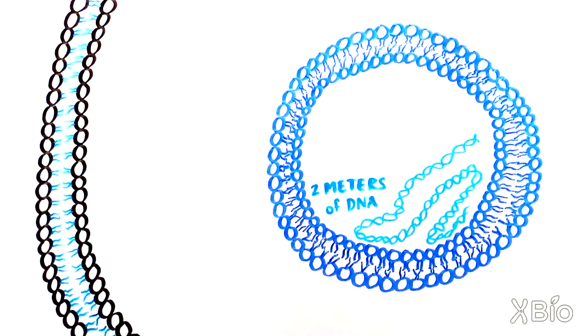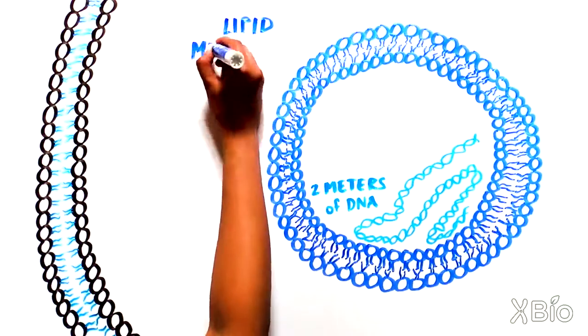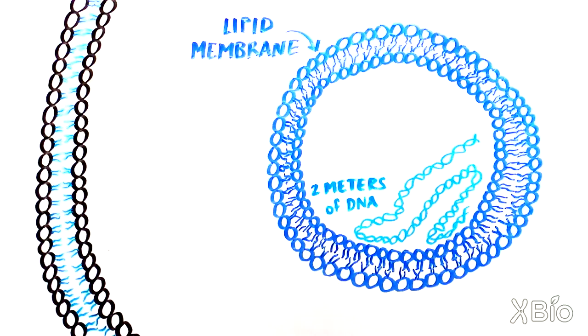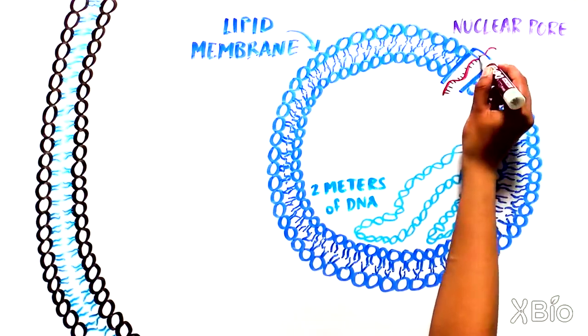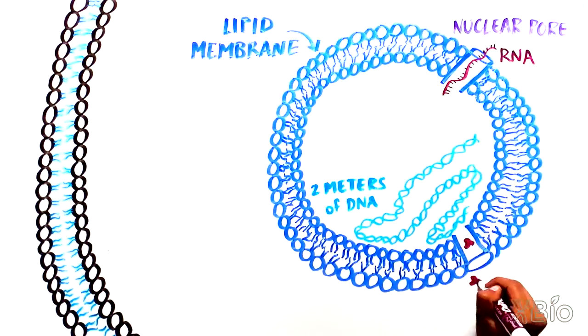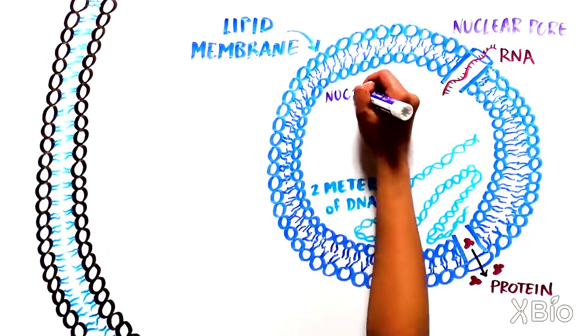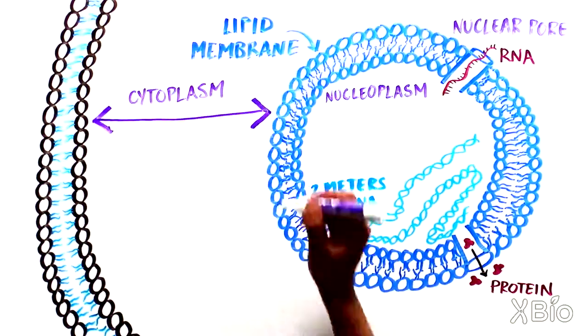The nucleus, like the plasma membrane and many other organelles, is surrounded by a lipid membrane. However, it has relatively big pores, called nuclear pores, that allow RNAs and some proteins to pass between the inside, the nucleoplasm, and the outside, the cytoplasm.